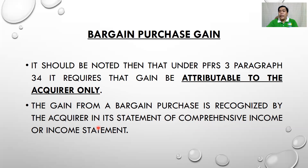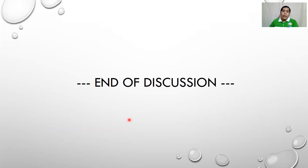The bargain purchase gain is always recorded in the profit or loss section. In financial accounting, comprehensive income is composed of profit or loss and other comprehensive income. The bargain purchase gain is always on the profit or loss side. That concludes the discussion — if there are questions, feel free to contact via messenger or group chat. Thank you for listening.